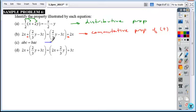So what is illustrated when the order changes? Again, commutative, but this time the property is multiplying. So it's a commutative property of multiplication.